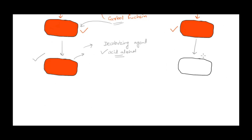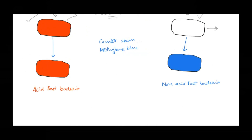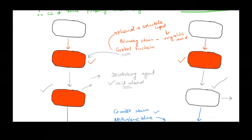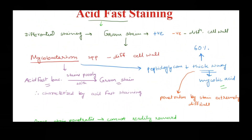Non-acid fast bacteria will lose the primary stain and become colorless after decolorization. We then apply the counter stain, methylene blue, to differentiate between acid fast and non-acid fast bacteria. The decolorized non-acid fast bacteria take up the methylene blue and appear blue in color. At the end of the procedure, under the microscope, you will see red-colored cells — the acid fast bacteria — and blue-colored cells — the non-acid fast bacteria.